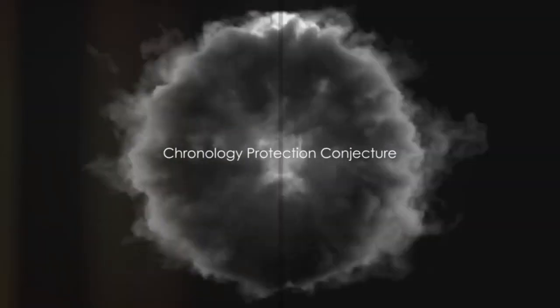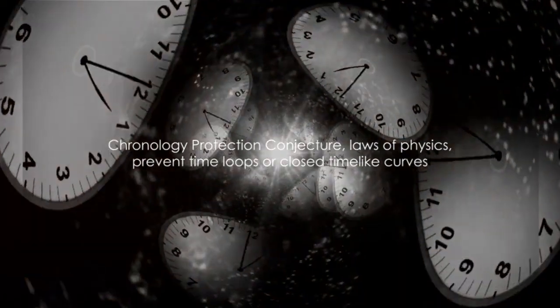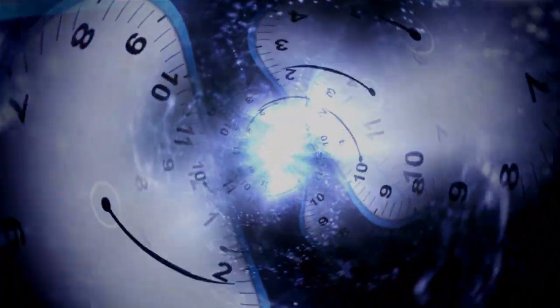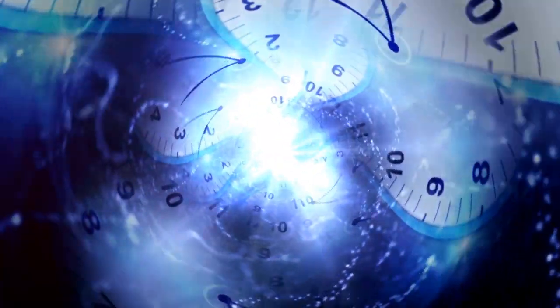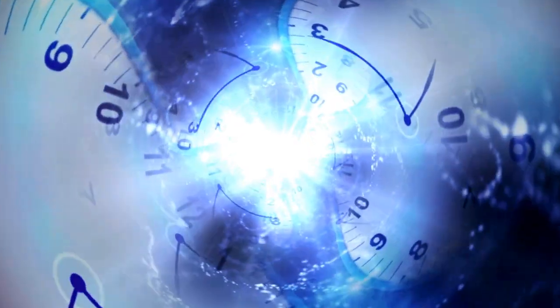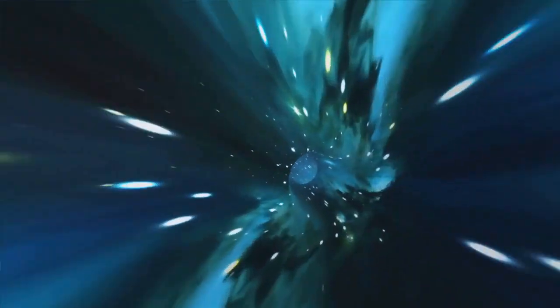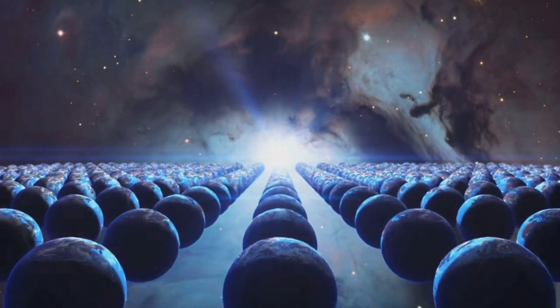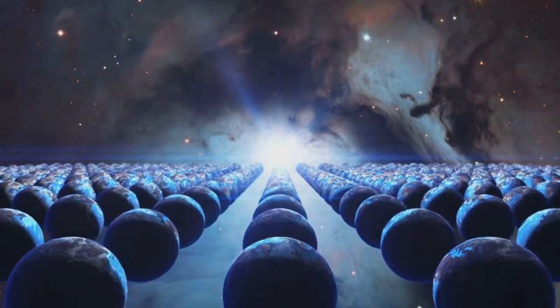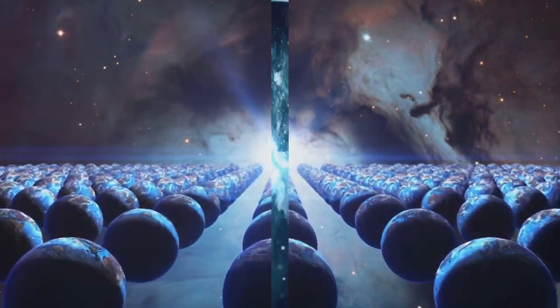Stephen Hawking proposed an idea that could potentially put a stop to all time travel theories. This is the chronology protection conjecture, a fascinating notion that suggests the laws of physics inherently prevent the formation of time loops or closed time-like curves. Essentially, it's as if the universe has its own defense mechanism against time travel, preventing any potential temporal meddling that could result in paradoxes. According to Hawking, the universe itself might be safeguarding its timeline from any potential paradoxes.